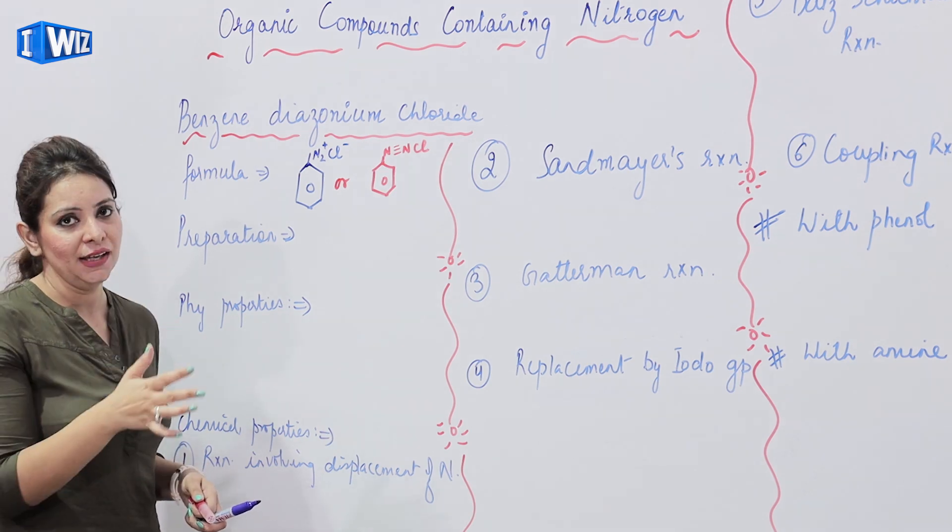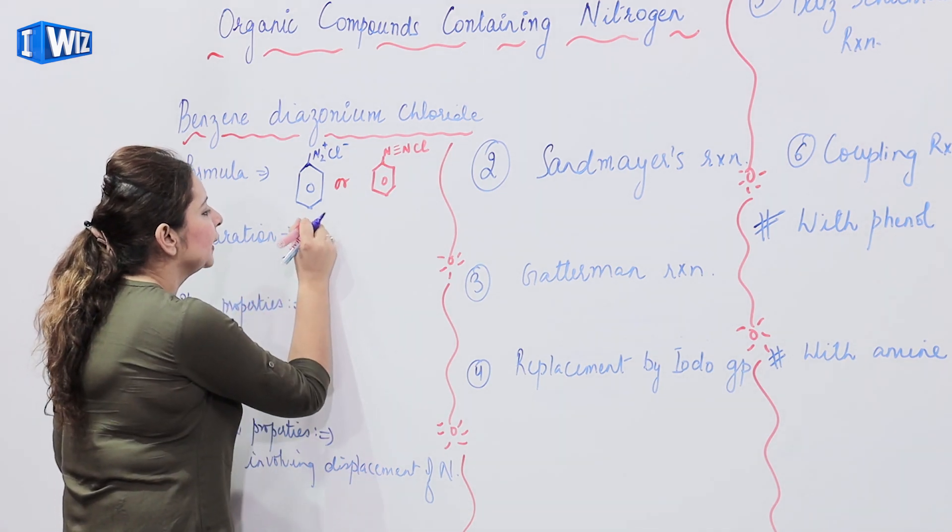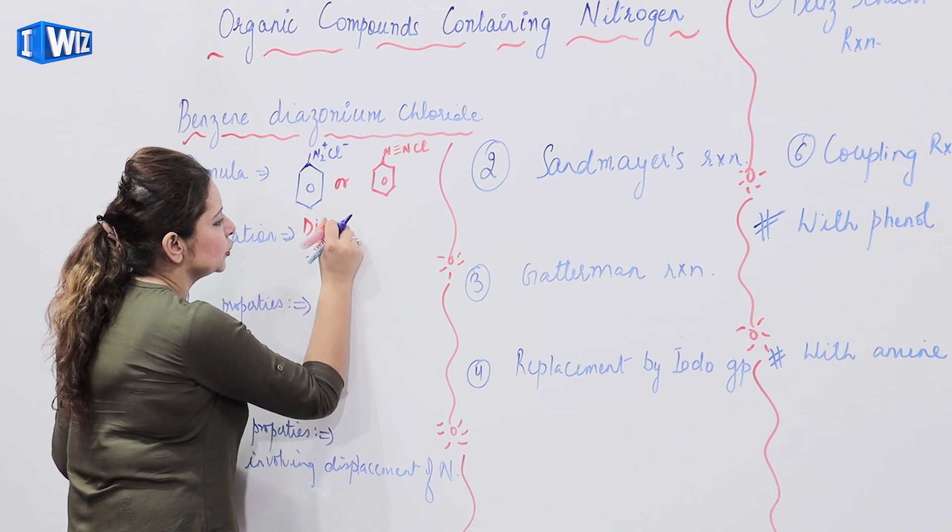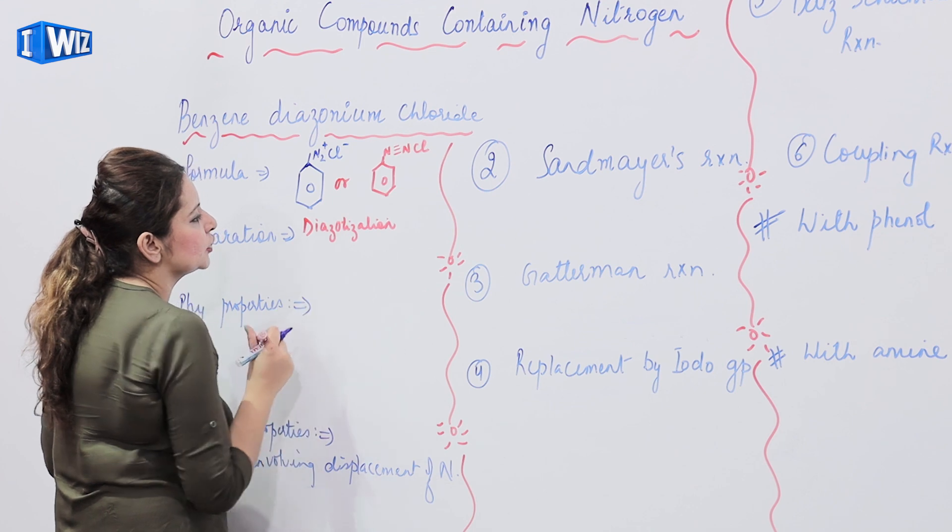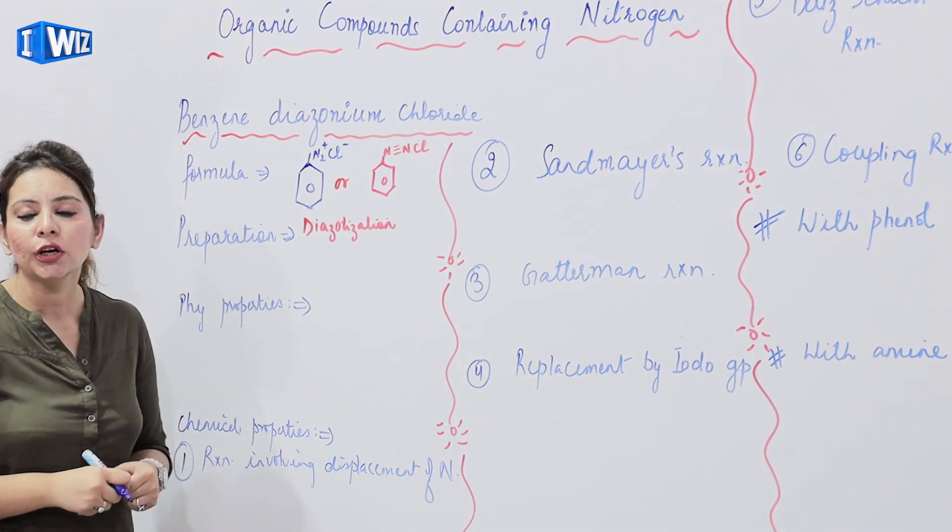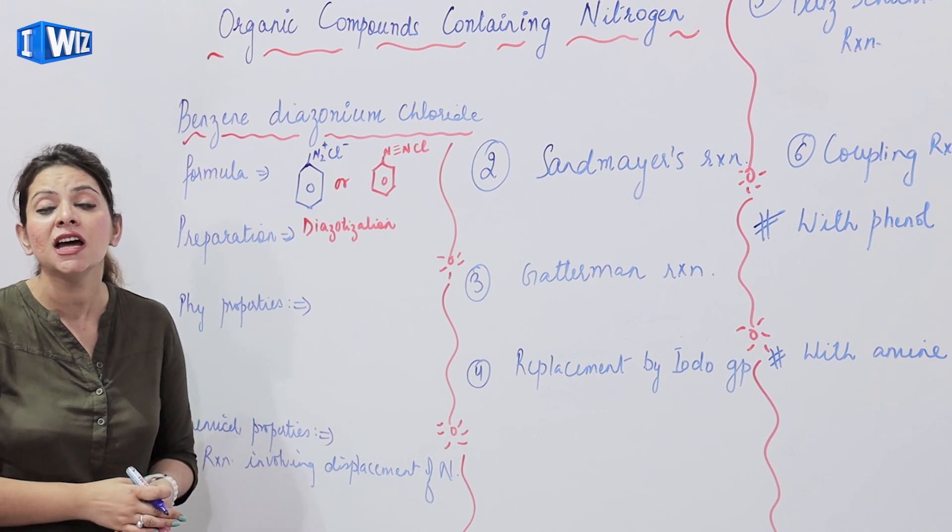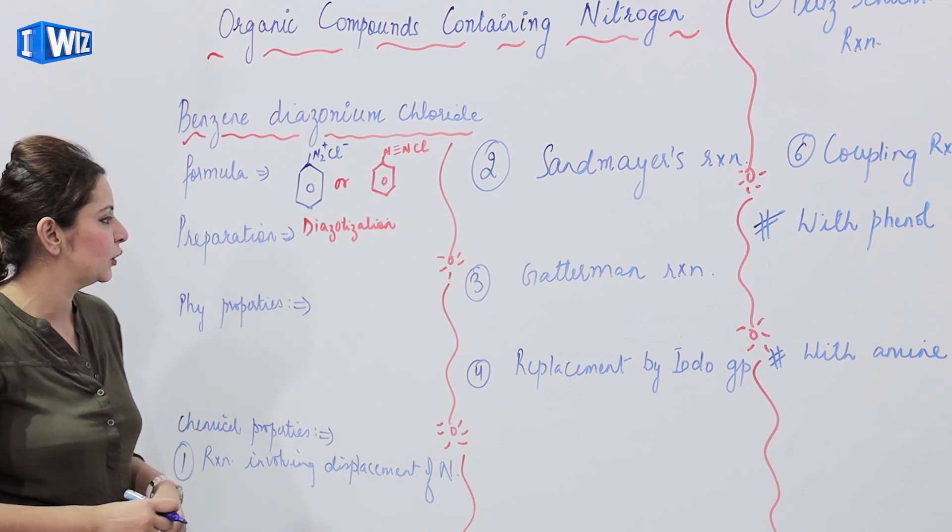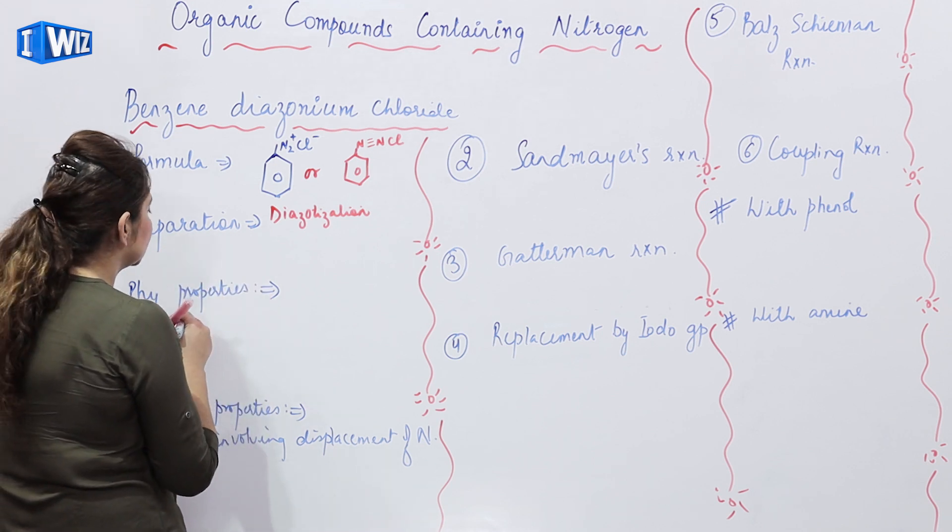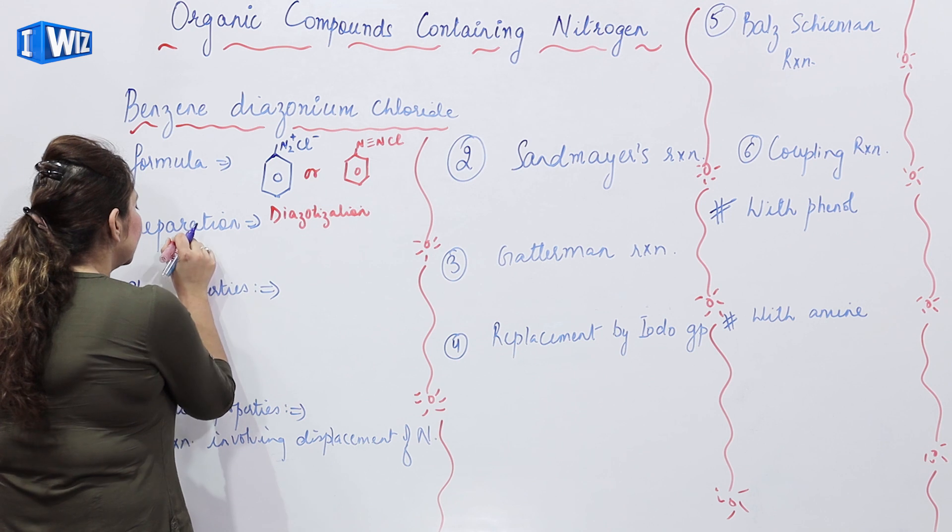Now, how do we make this? It is prepared by a reaction which is called Diazotization Reaction. What do we call Diazotization Reaction? It is a very important reaction and the compound is very important, so we are studying it separately. In many places, Benzene Diazonium Chloride is used. What do we take?